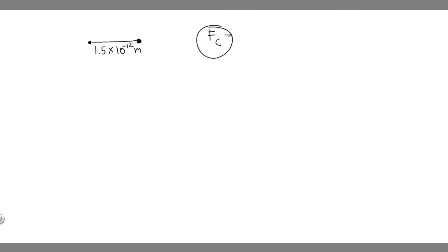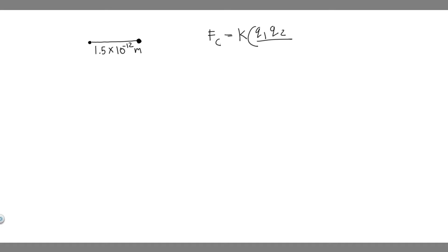The formula you use to solve for the magnitude of the electric force of attraction is F sub c, which equals k — a constant — multiplied by Q1 times Q2, all over R squared. This is the formula we're going to use.